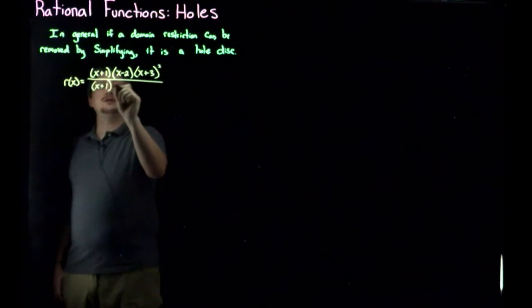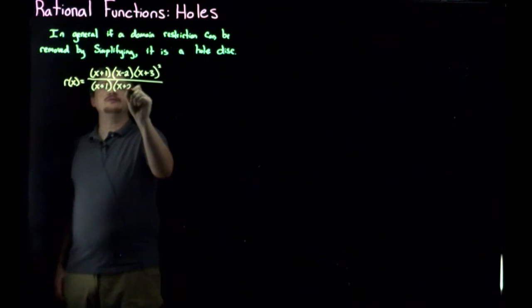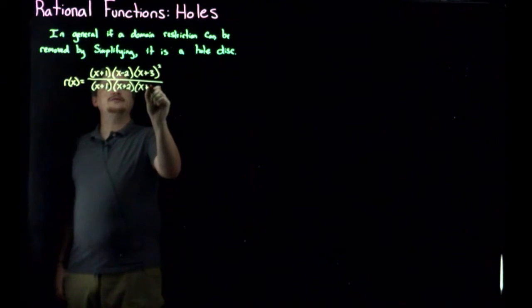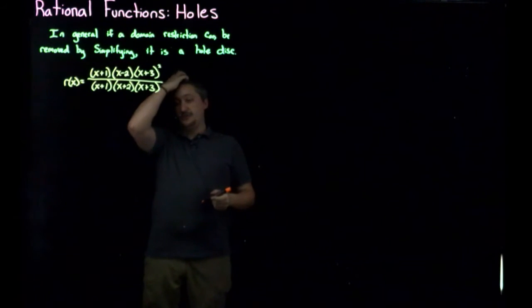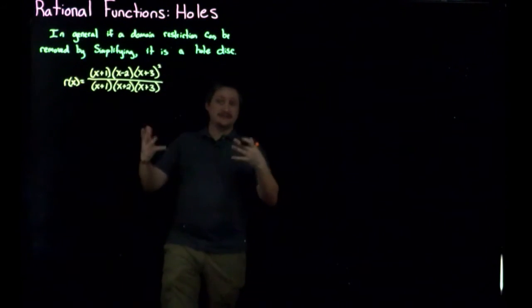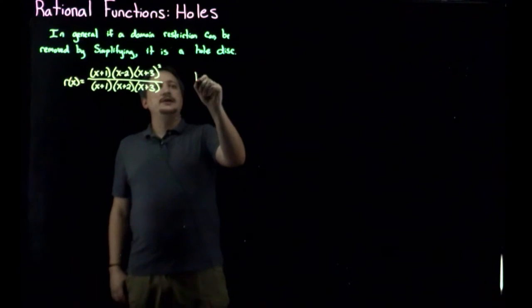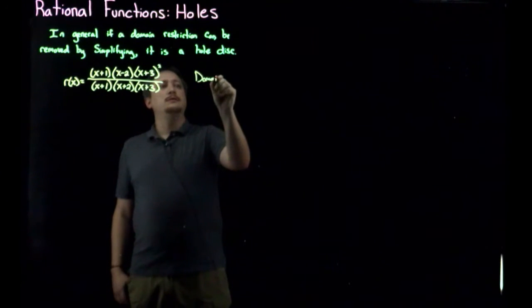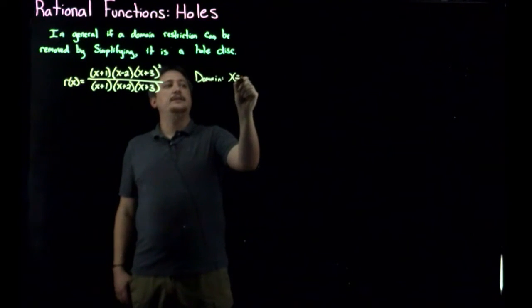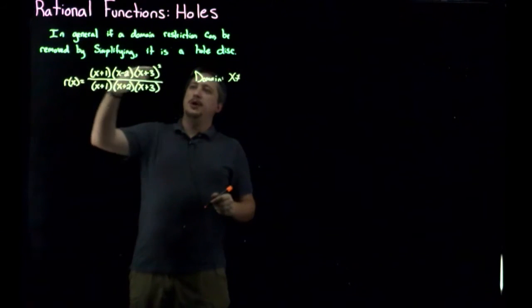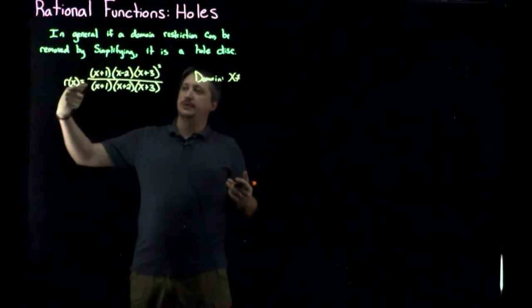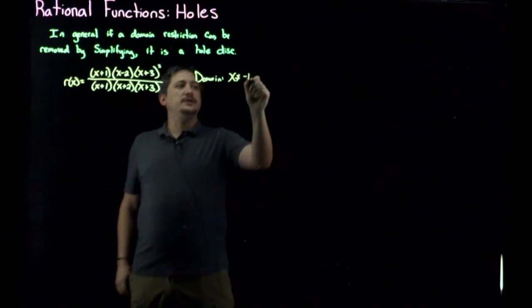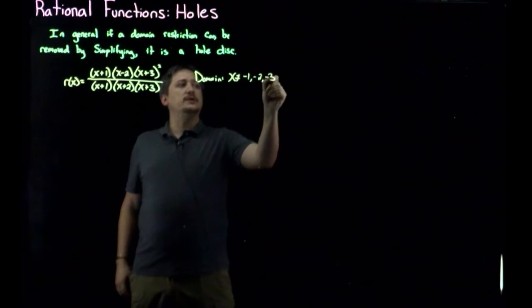So again, pretending that we already did all of the annoying simplification to get here. Let's say we have this as our, not simplification, excuse me, all the annoying factoring to get here. Then our domain is x cannot be, right? So polynomial in top and bottom, so no restrictions for the top and bottom functions, but the bottom can't be zero. So it can't be negative one, negative two, or negative three.